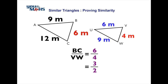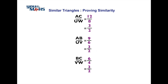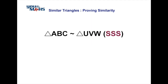All the ratios are the same. We summarize this by listing every pair of sides and noting the final ratio of 3 over 2, which confirms that the two triangles are similar, and the similarity condition is side-side-side.